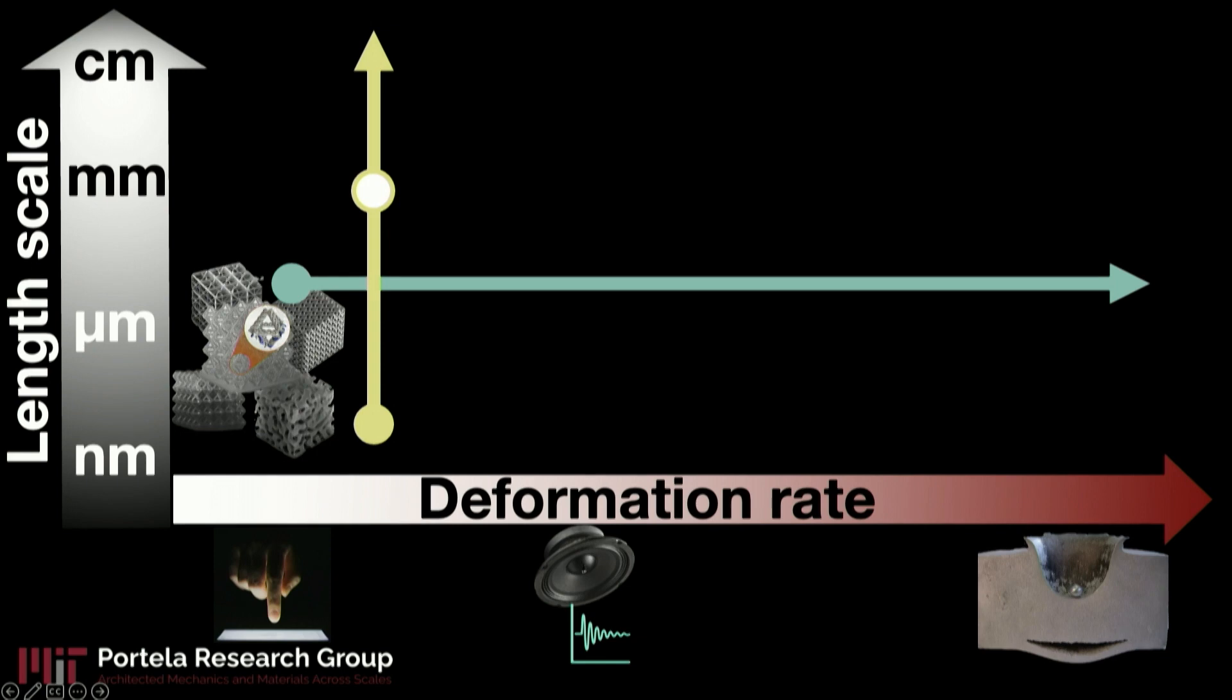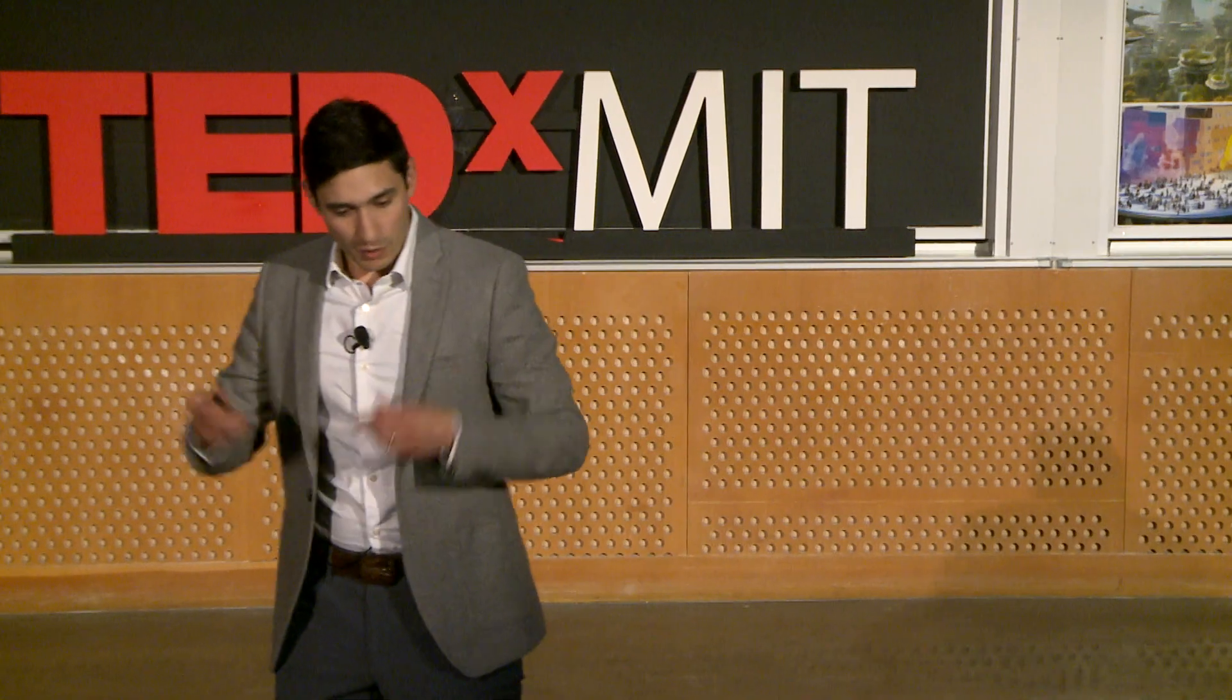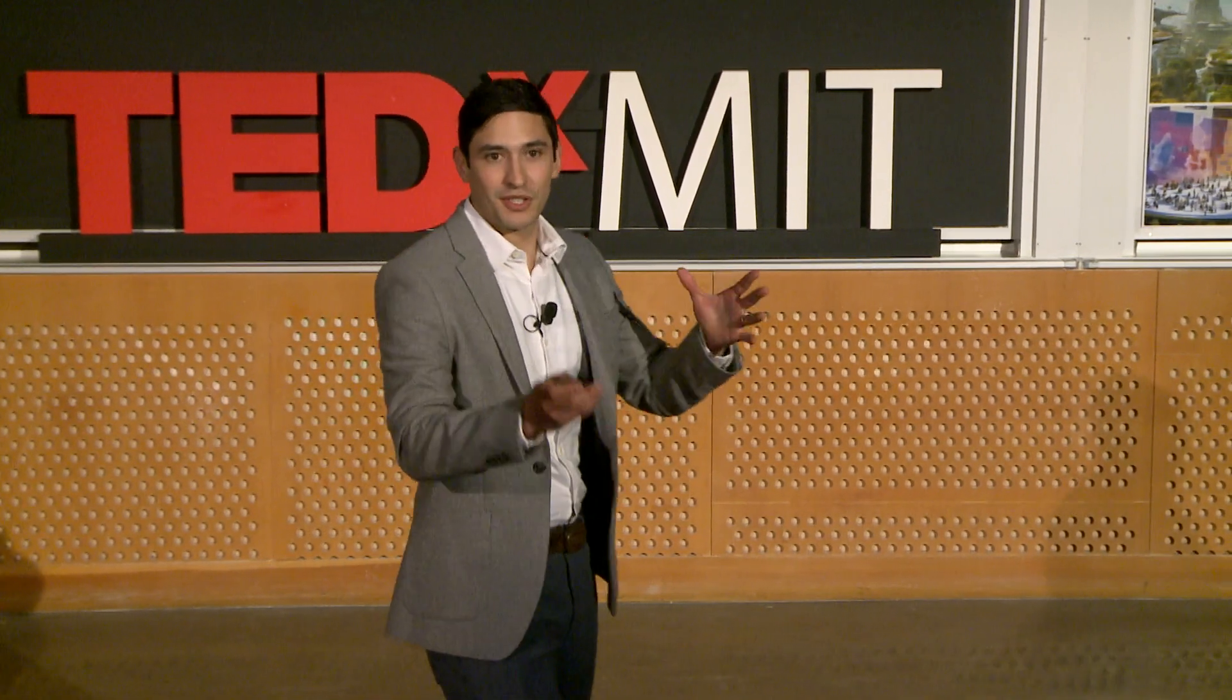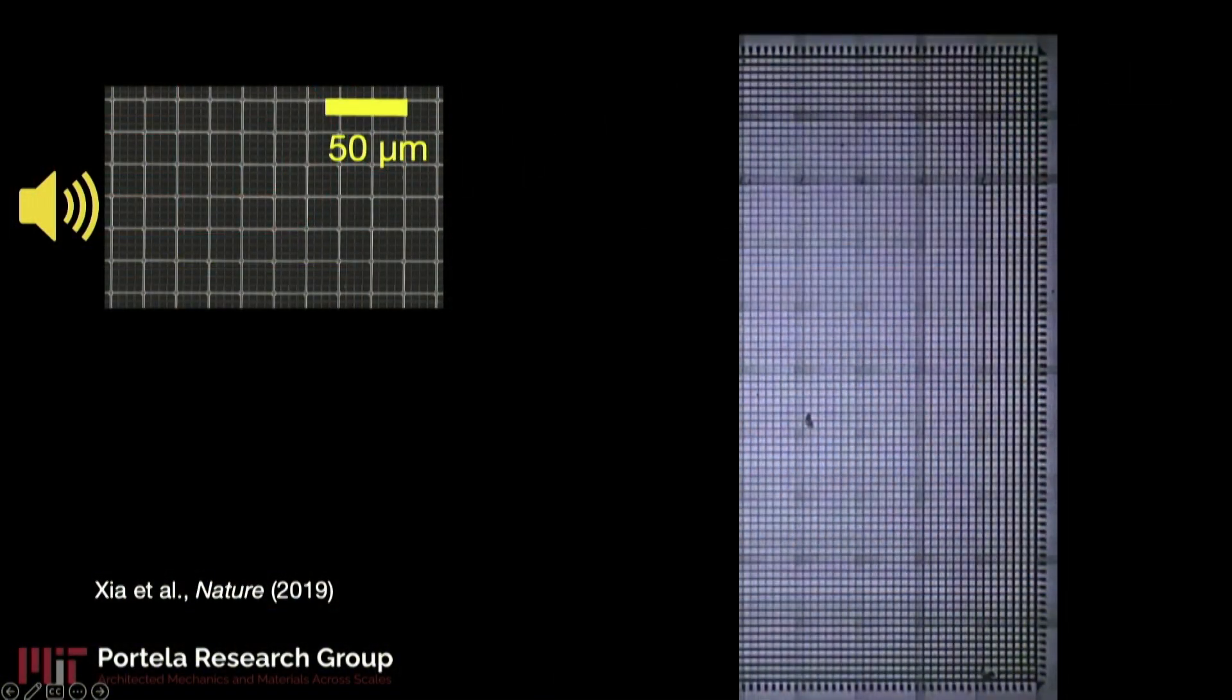Now let me move into the more dynamic regime. How mechanical waves or sound propagate through these materials. So one of the examples that we've been working with is this. And you can think of it as a square grid of an architected material. And we want to study how sound propagates through it. So this material is nothing special.